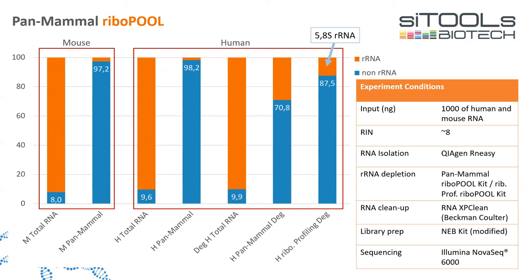At that time we were developing a ribosome profiling Ribopool and tested it on degraded samples. We found that 12.5% more oligos targeting the 5.8S rRNA in our next ribosome profiling Ribopool improved results. The take-home message is that our ribosome profiling Ribopool can also be used on FFPE and degraded samples.